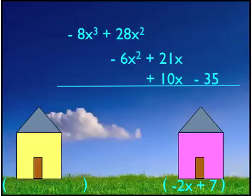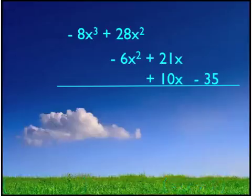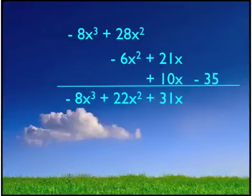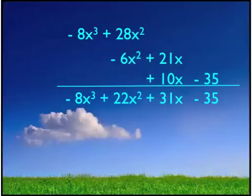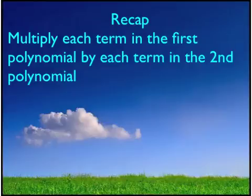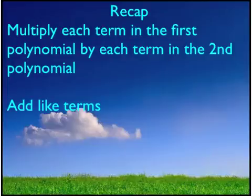Now we add like terms. Negative 8x to the third has no like terms, so we just bring it down. The product of those two polynomials is negative 8x to the third plus 22x squared plus 31x minus 35. To recap: multiply each term in the first polynomial by each term in the second polynomial, then add like terms.